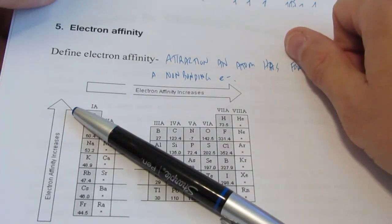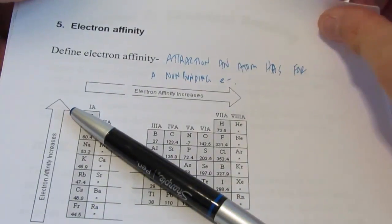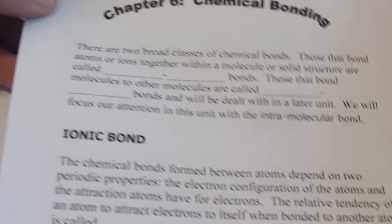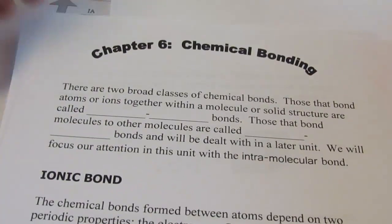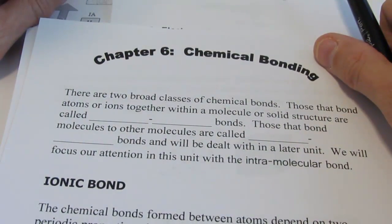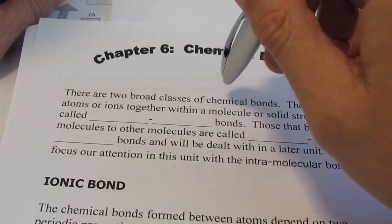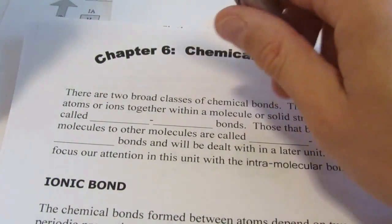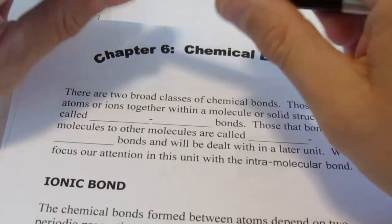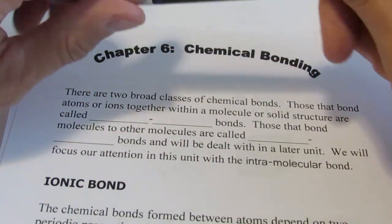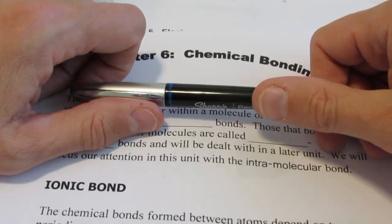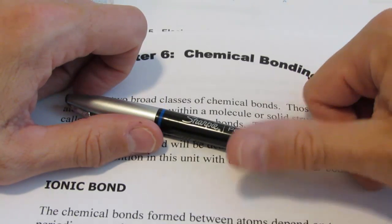Alrighty, we're finished up with periodic properties. We get to start bonding next, and that happens to be one of my most favorite units to teach. We'll do molecular shape, bond angle, polarity — all sorts of fun things with this chapter coming up. I think you'll enjoy it. So have a great day. Thanks for watching. Bye-bye.